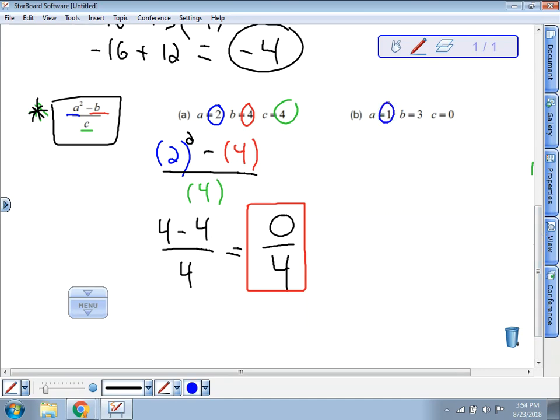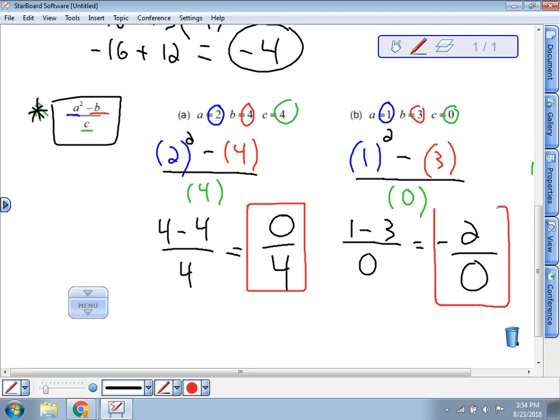So now this time A is 1, so when I see an A, I'm going to put 1. I'm going to square that. Same expression, I'm going to put the minus sign. And now where I see a B, B is 3, so I'm going to put minus 3. And then on the bottom, it says right here that C is 0. So when I see that C, I'm going to put in a 0. So when I do this problem, 1 squared is 1, so it's just 1 minus 3 all over 0. Well, 1 minus 3, that's going to be negative 2, and on the bottom I have a 0.